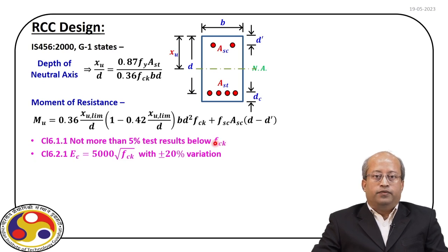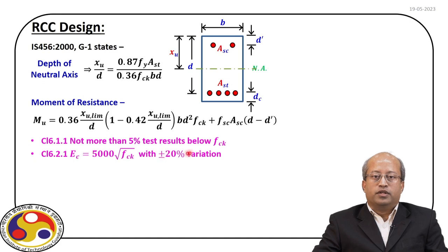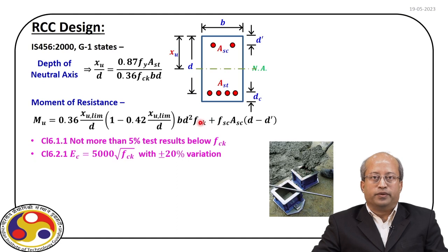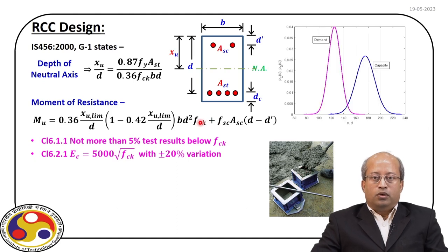Not only that, if we use this FCK value and estimate the Young's modulus of concrete, the code indicates that there may be a plus or minus 20 percent variation. So when we construct a structure, we cast concrete cubes and then test them. From there, we get the distribution of the concrete strength and we identify which value we should use. So we get these kinds of distributions when we estimate capacity and demand.